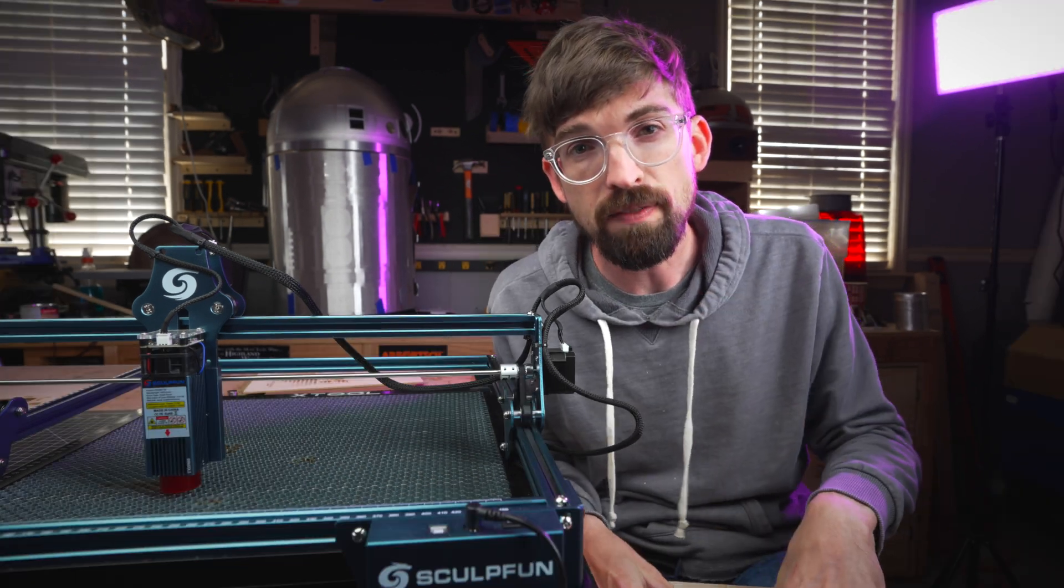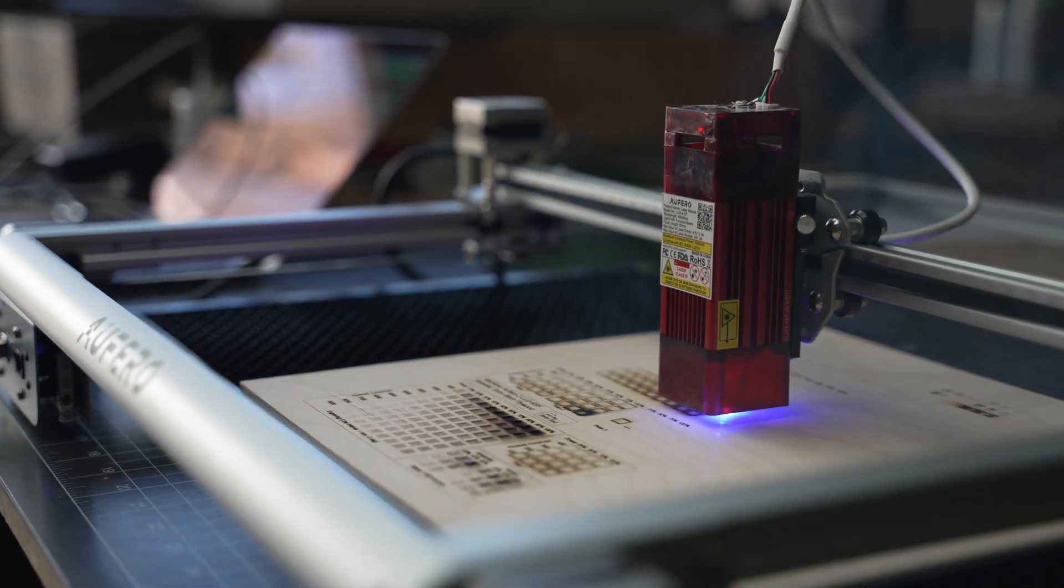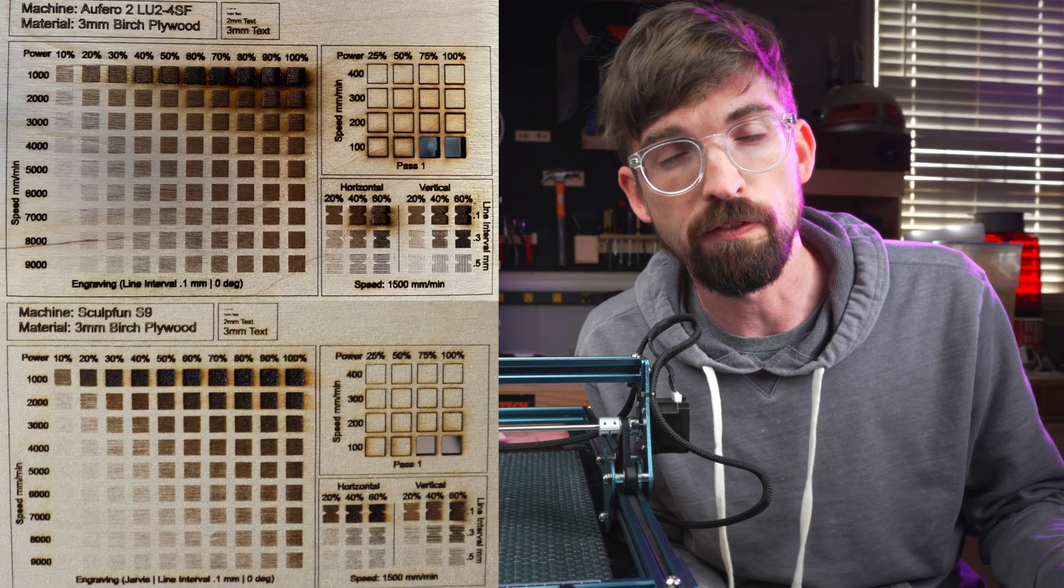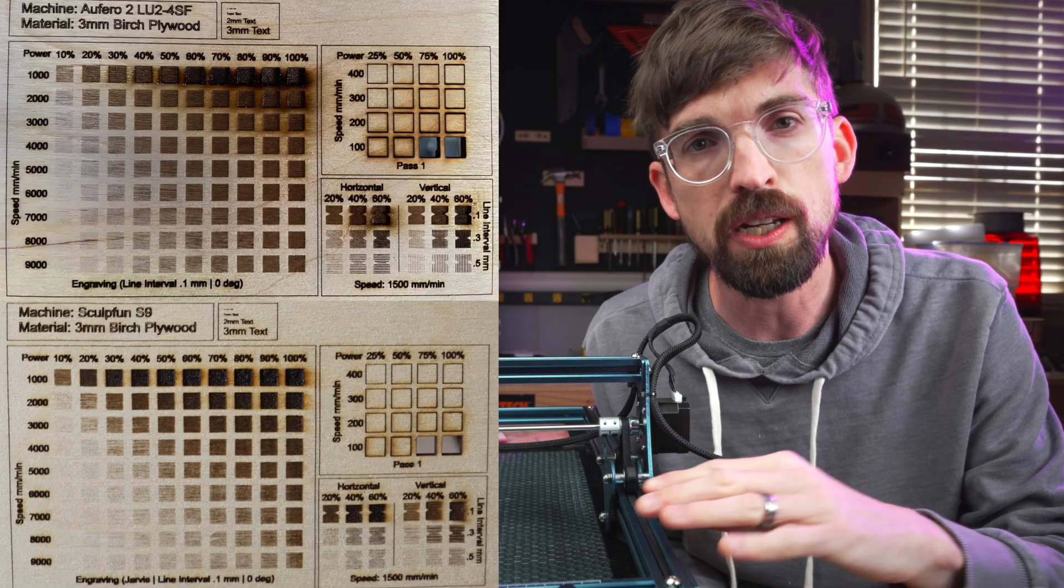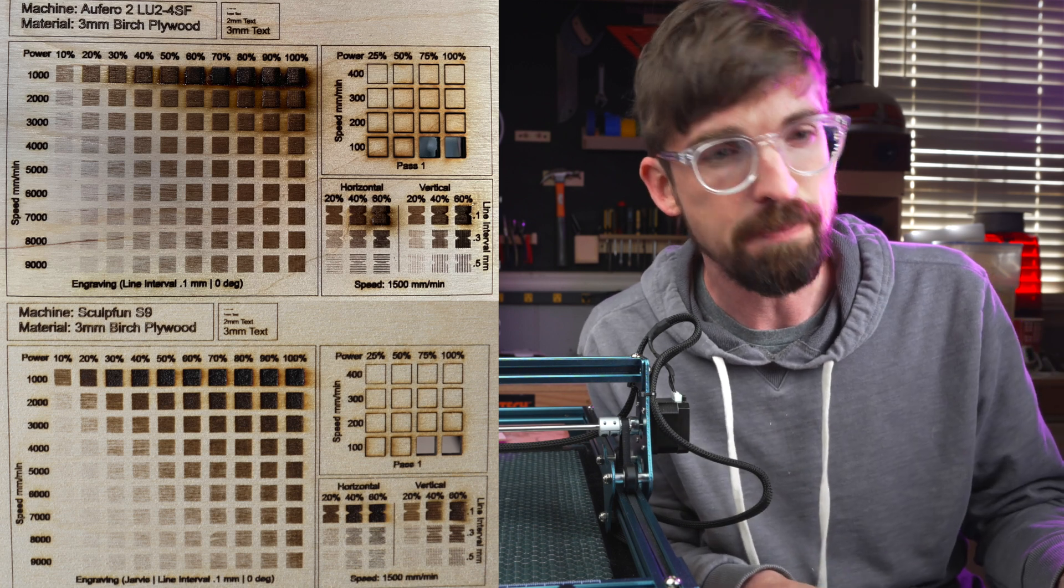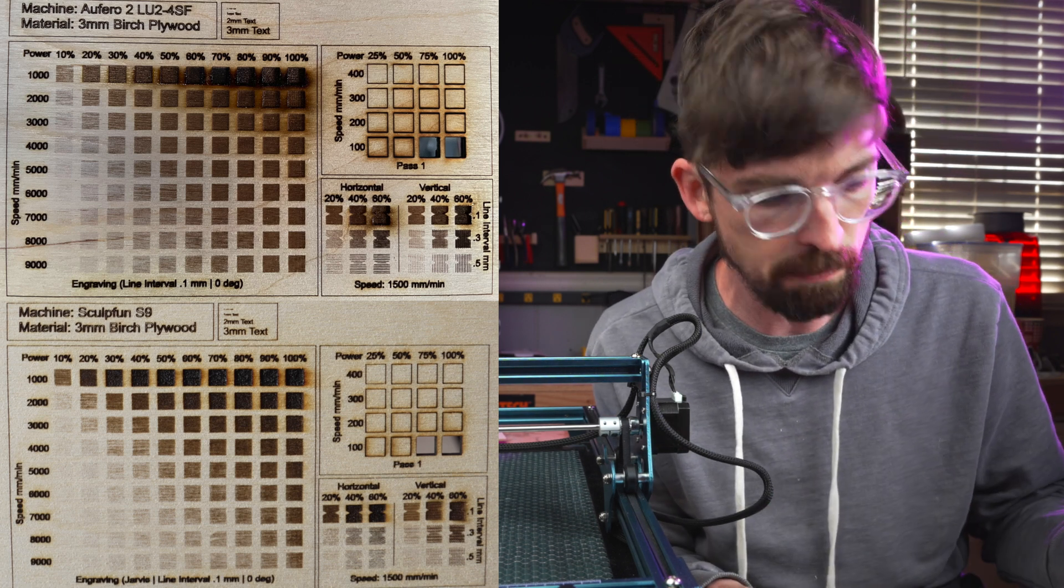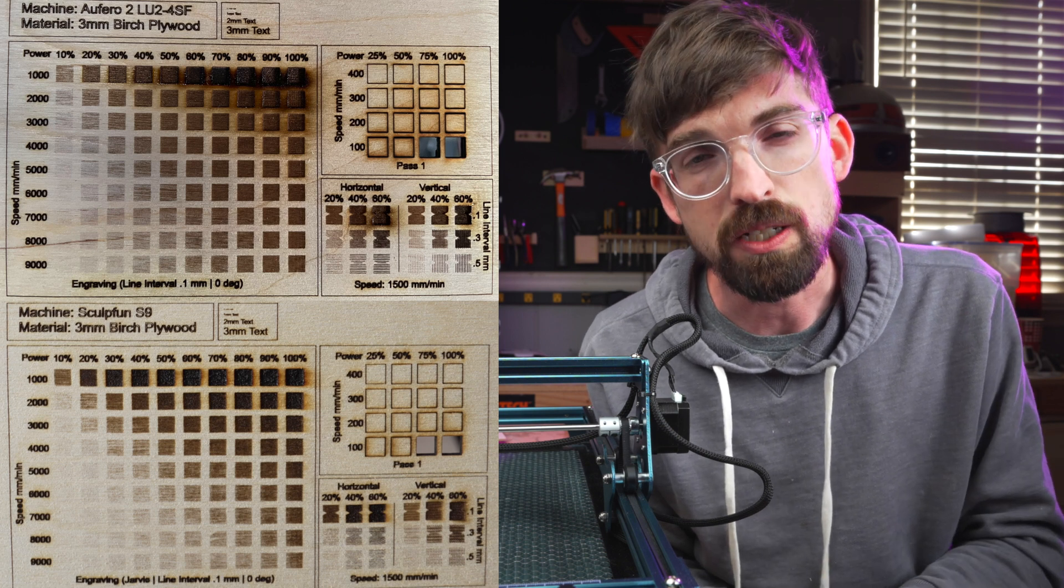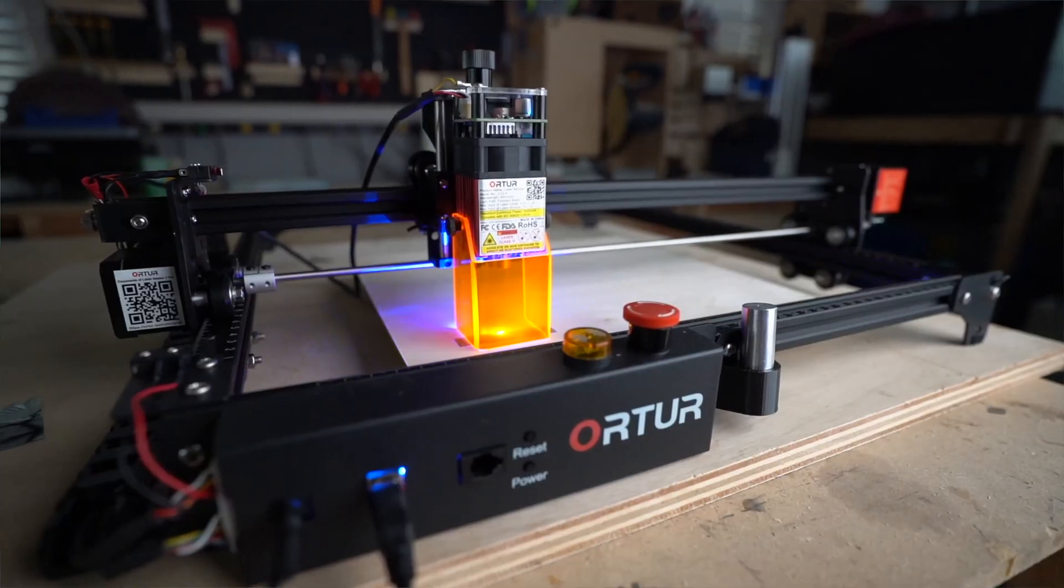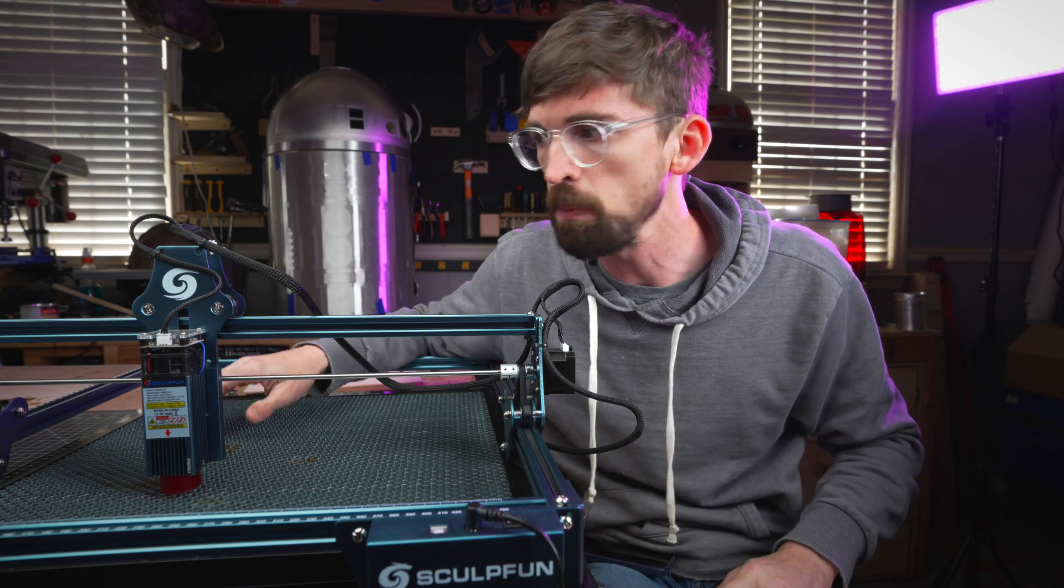As a point of comparison for that engraving test, this is the Alfawise 2, which is a cheaper version of the Ortur Laser Master Engraver 2 Pro, which is always a mouthful to say. Specifically, this is with their short focus module. The short focus version is for engraving mostly, and the long focus is for cutting. You're going a little bit deeper at 100% power with the Alfawise module versus the SculptFun. But still overall, you're going to get pretty much the same performance. The cutting is going to be about the same. The big difference between this one and the Ortur Laser Master Engraver 2 Pro is that it has limit switches and it's just a hair bit nicer in terms of build quality.